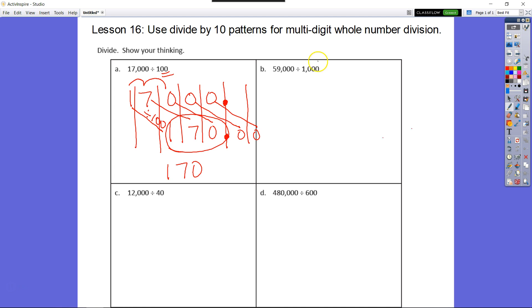Same thing here. So if you look, what we did was we have 59,000 divided by 1,000. So every time we cross out a zero in our divisor, we can cross out a zero in our dividend. So that equals 59.